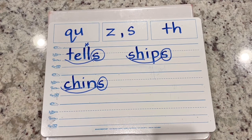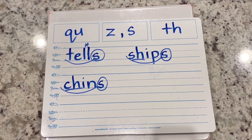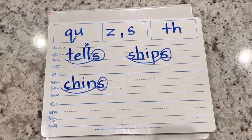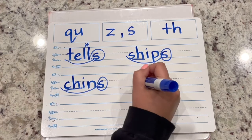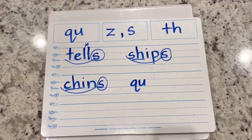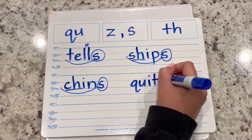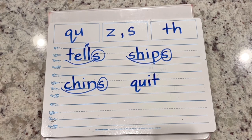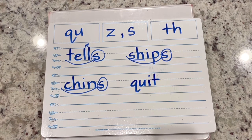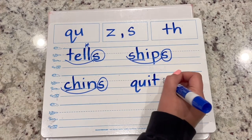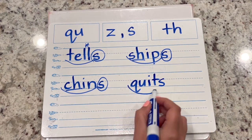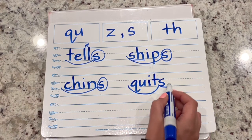Write the word quits. The base word is quit: QU-I-T. What do I add to make it say quits? The suffix S. Scoop your base word, circle your suffix.